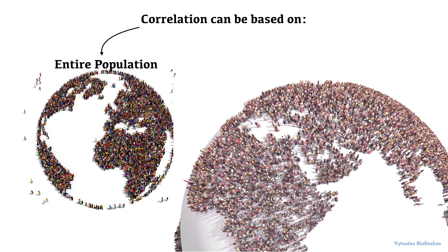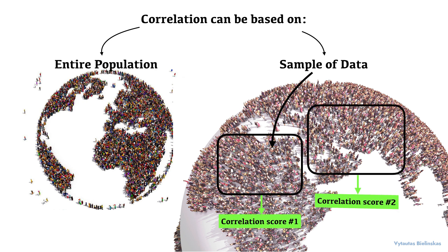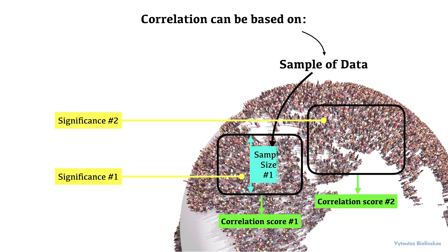However, most data scientists work with a sample of data. So, if we obtain a different sample, it is possible we could have different correlation scores. As such, we need to assess the significance of the correlation values we calculated, which depends on the sample size.